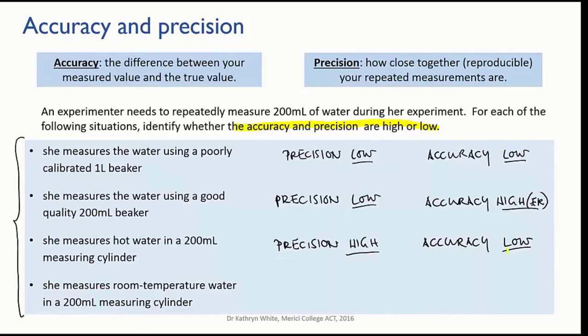Okay, in our final situation, she's finally got it right. She's using the right kind of glassware, so her random error is reduced, and she has eliminated the systematic error caused by using hot water, so her accuracy should be good. In this situation, her volumes will cluster closely around 200 mils.